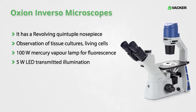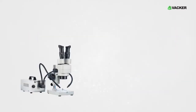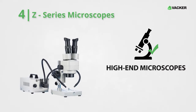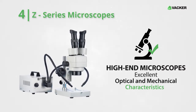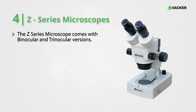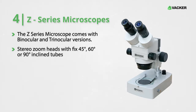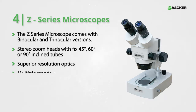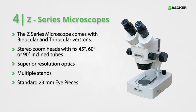Number four: Z-Series Microscopes. These versatile high-end stereo microscopes have excellent optical and mechanical characteristics. The features of Z-Series microscopes include binocular and trinocular versions, stereo zoom heads with fixed 45-degree, 60-degree, or 90-degree inclined tubes, superior resolution optics, multiple stands, and standard 23-millimeter eyepieces.